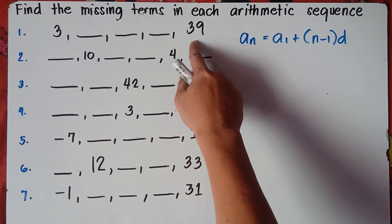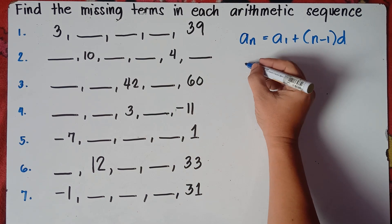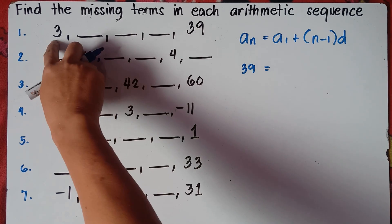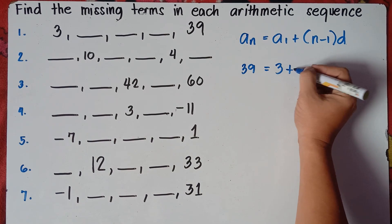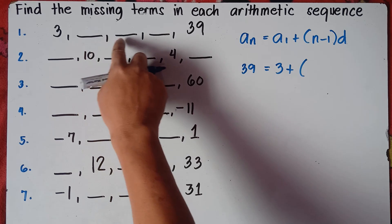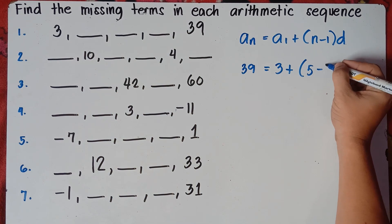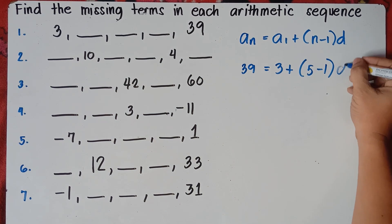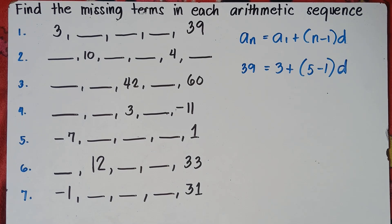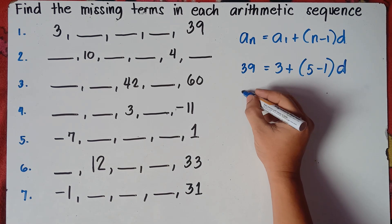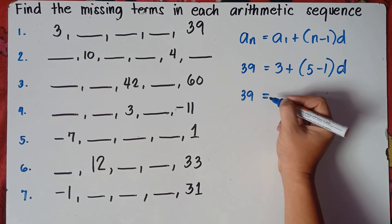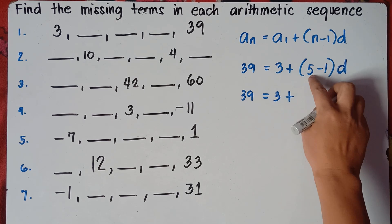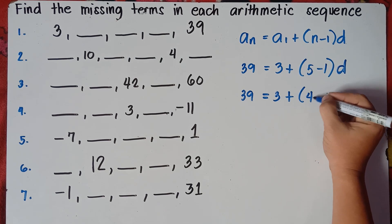Let's answer number 1. a sub n will be the last term, so 39 equals a sub 1, which is the first term, 3. Plus n — the number of terms: 1, 2, 3, 4, 5 — so we have 5 terms. That gives us 5 minus 1, times d. So the next step: copy 39 equals 3, plus 5 minus 1 which is 4, then times d.